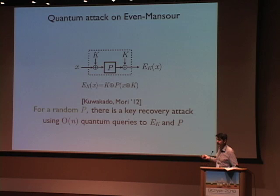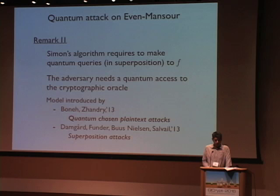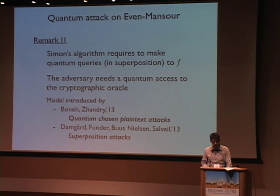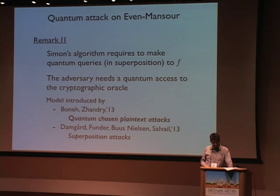The second remark is more important for us. We need to make the queries to F in superposition: we send a uniform superposition of all inputs of F. This model is called the quantum chosen plaintext model. It's a well-studied model, introduced a few years ago. What does it mean in practice? Something like frozen smart cards: a smart card is supposed to make some encryption, and with liquid nitrogen and a laser — I'm a theoretician, so I don't know how to do that — but there are probably well-qualified people in the audience.